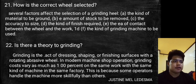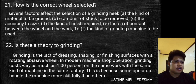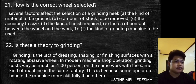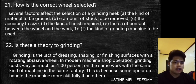How is the correct wheel selected? Several factors affect the selection of grinding wheels: the kind of material to be ground, amount of stock to remove, accuracy of size, the kind of finish required, the eye contact between the wheel and the work, and the kind of grinding machine to be used.